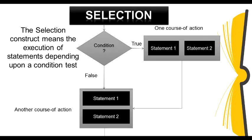Selection construct — what is it? There will be two courses of action: one course of action will be true and the second will be false. If the true condition is satisfied, one course of action will be executed. If the false condition is satisfied, another course of action will be performed. Selection construct means the execution of statements depending upon the condition. This construct is also called the decision construct because it helps in making decisions about which set of statements to be executed.